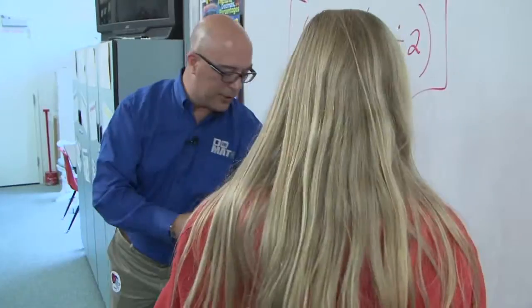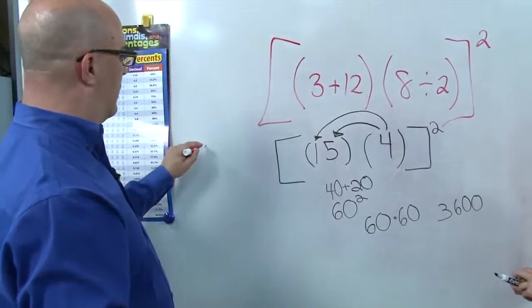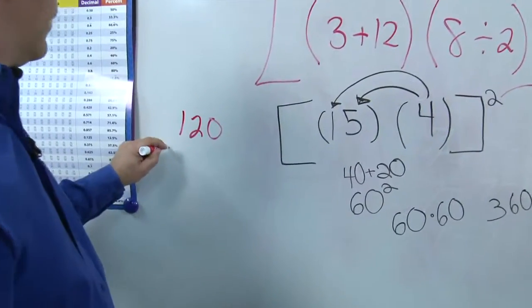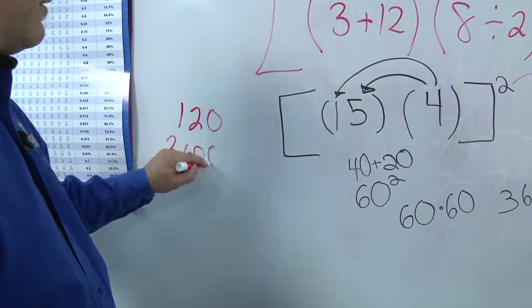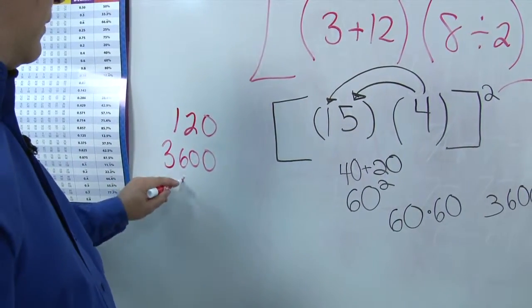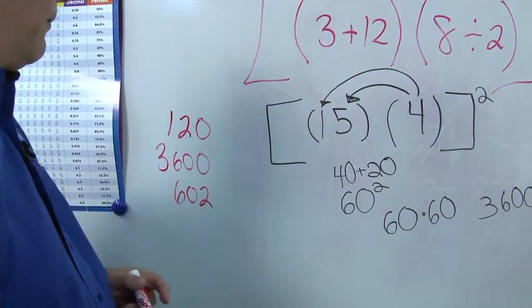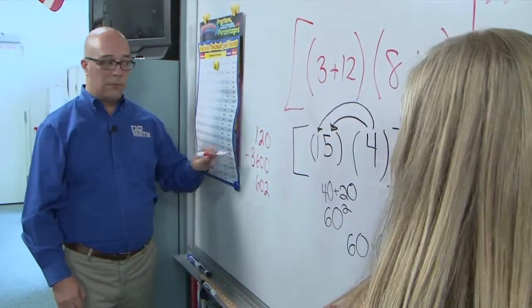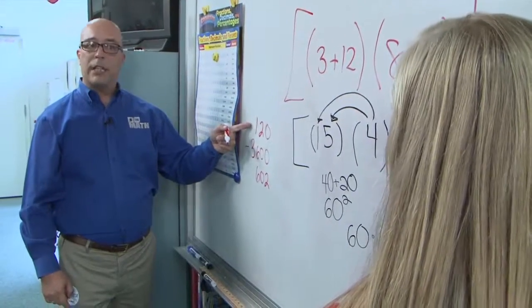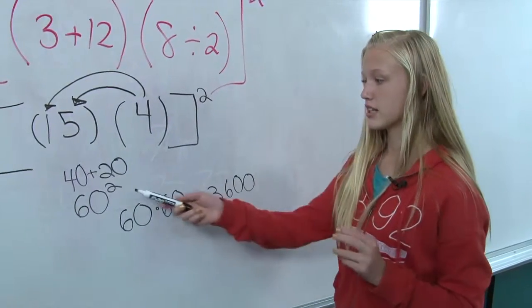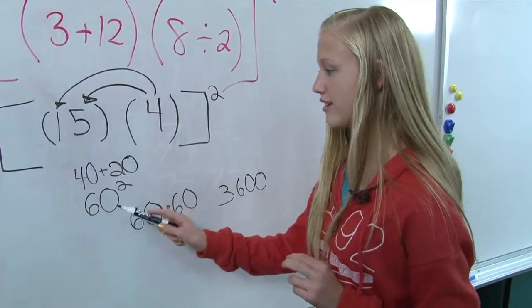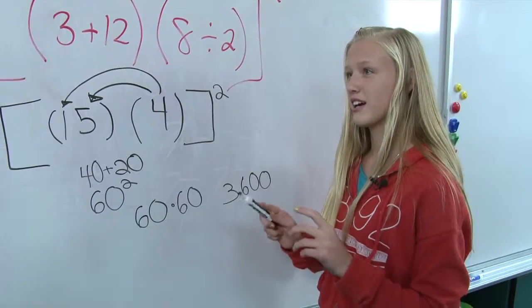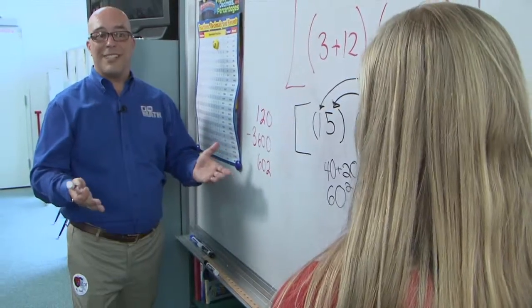If somebody saw on a test 120, or 3,600, or 602, you came up with 3,600, and you explained how you got that. Yeah. Why would somebody possibly get 120? Because they'd see the 2, and they'd do 2 times, 6 times 2, 60 times 2. Right. They would just go 60 times 2.